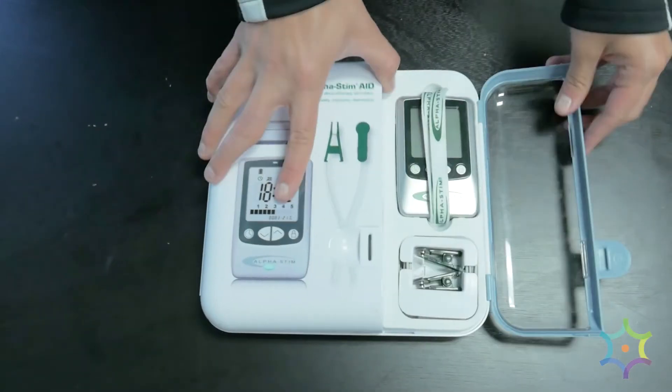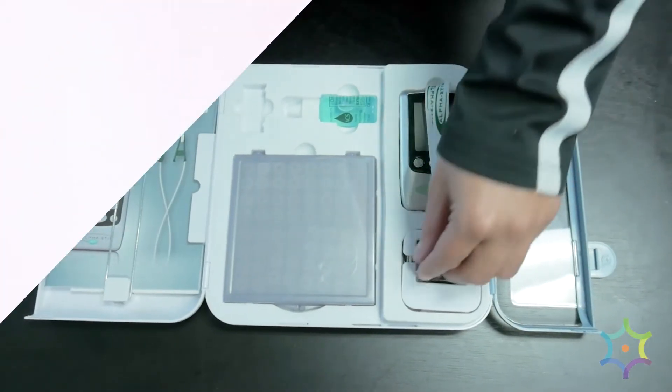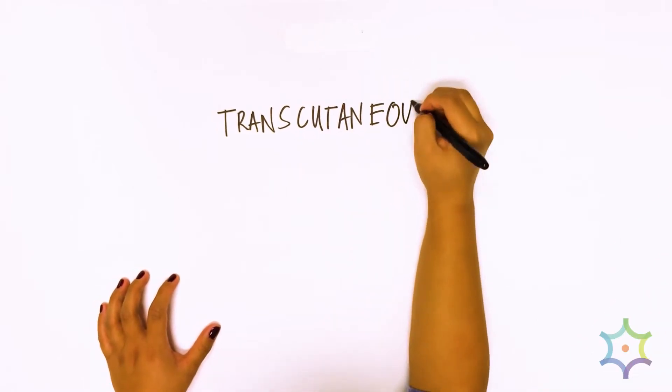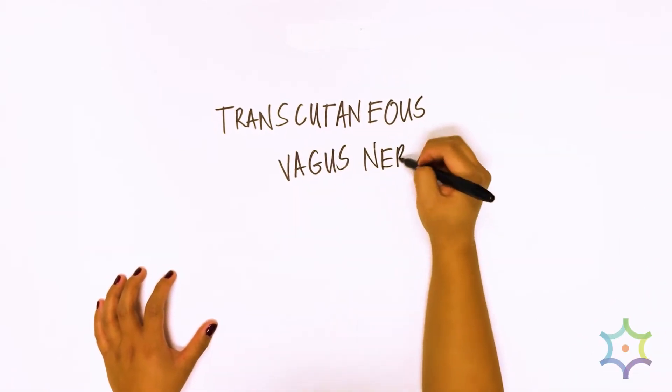Today we're going to be talking about a therapy at Cortica called Transcutaneous Vagus Nerve Stimulation, or TVNS.